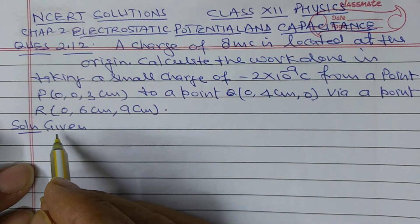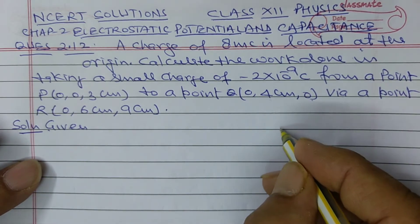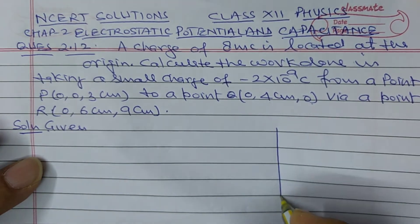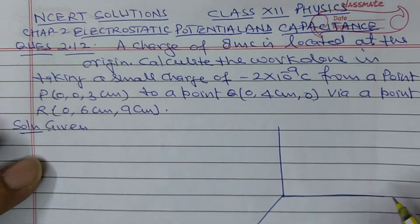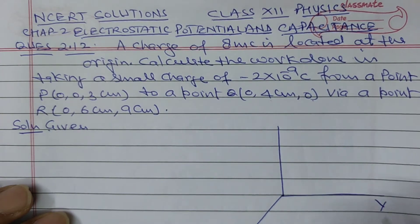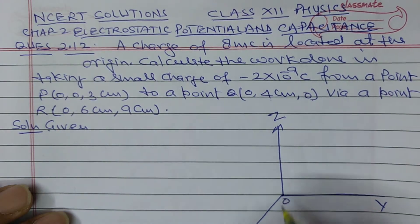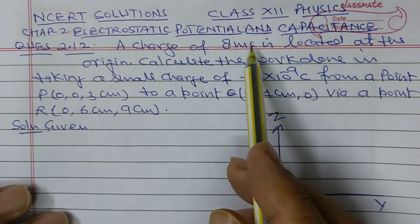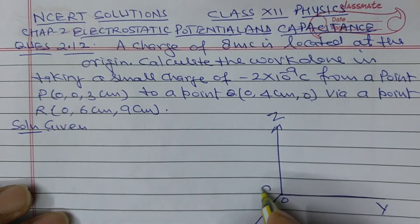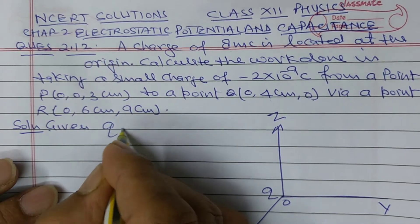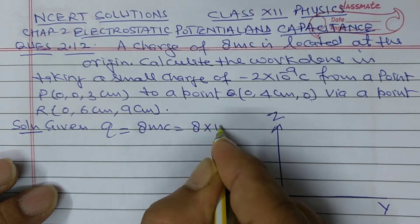Here, in this question, given that a charge of 8 millicoulomb is located at the origin. Let us set up the x-axis, y-axis, and z-axis with the origin here. The charge Q at the origin is 8 millicoulomb, where millicoulomb means 10 to the power minus 3 coulomb.